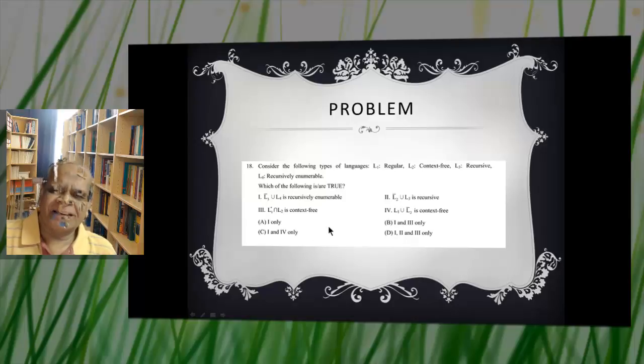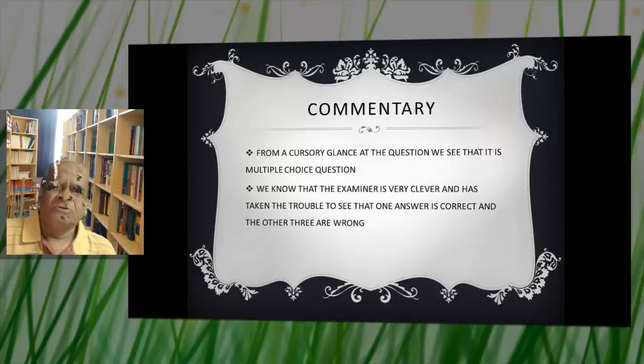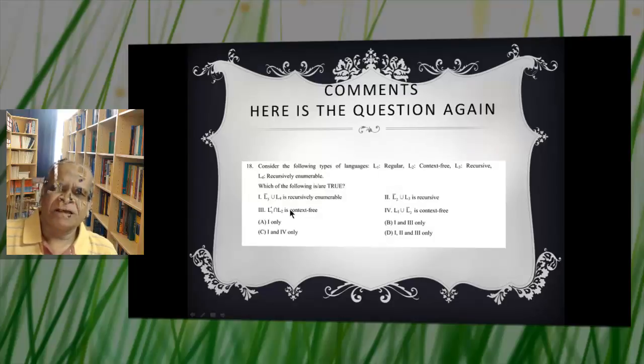The examiner says one is correct and is assured that three are wrong. From a cursory glance at the question we see it is a multiple choice question. So examiner is very clever. He has taken the trouble to see one answer is correct and three answers are wrong.